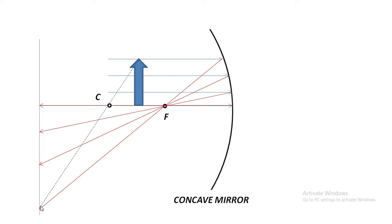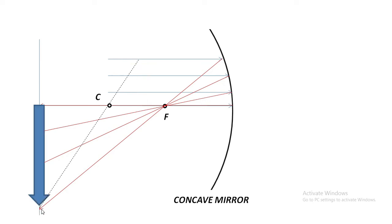Assume an object is placed far away from the mirror — beyond the focus point. The light rays from the object hit the mirror and reflect through the focus point. To get an image, these reflected rays must meet with another ray from the object passing through point C. In this case, the ray through C and the reflected ray through F meet at a point, forming the image there. The image is inverted because light rays touching the top of the object reflect downward — this is why an object kept far from a concave mirror gives an inverted image.